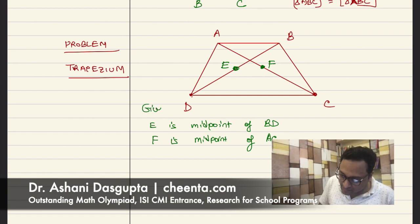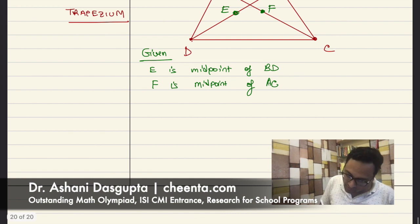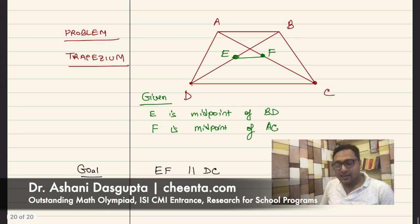All this is given data. Now, our goal is to show that EF is parallel with DC.